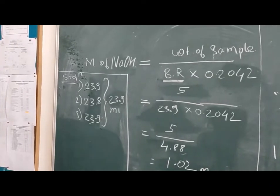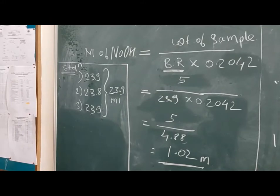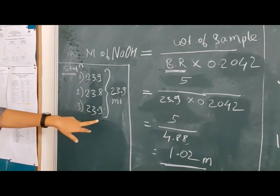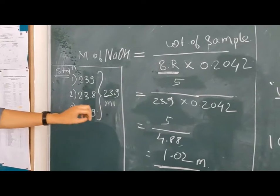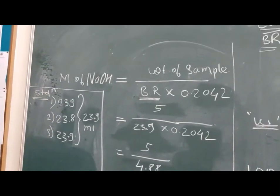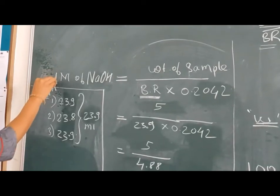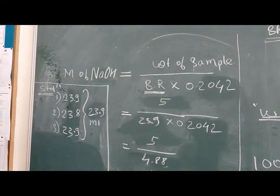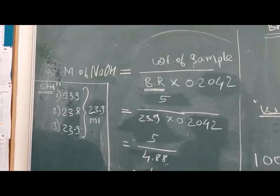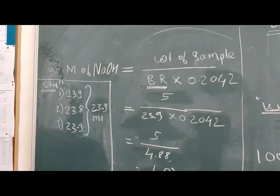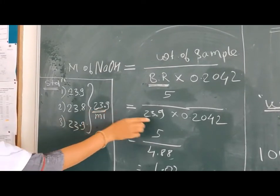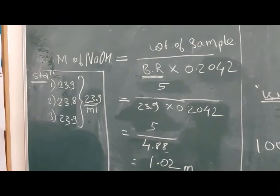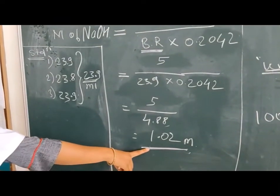Now let's move to the calculation part. Standardization readings: 23.9, 23.8, 23.9; the mean is 23.9 ml. Molarity of sodium hydroxide equals weight of sample divided by burette reading into 0.2042. Putting in the values: 5 divided by 23.9 into 0.2042 gives a calculated molarity of 1.02 molar.